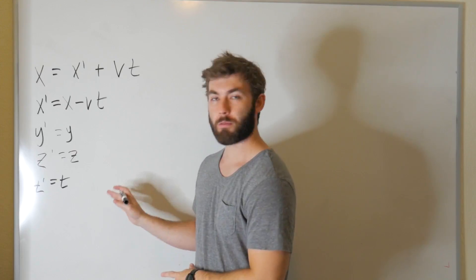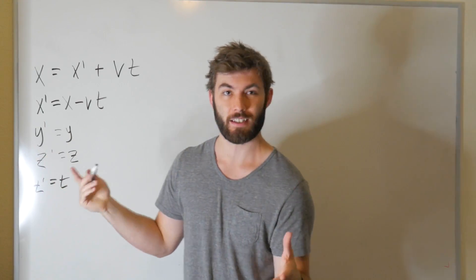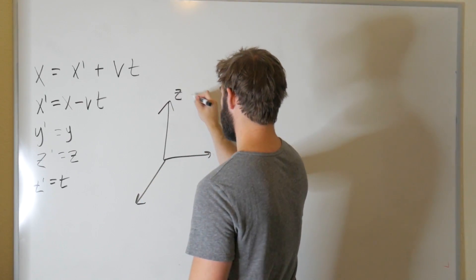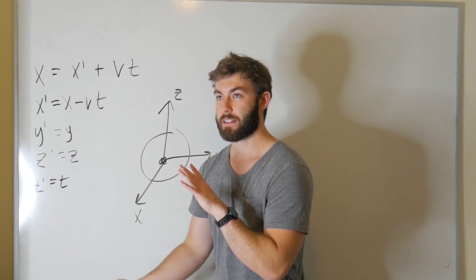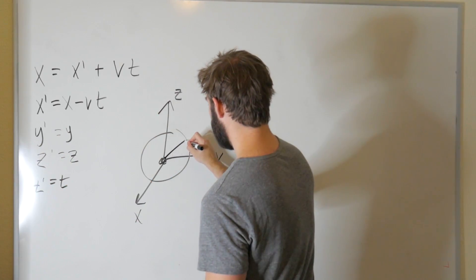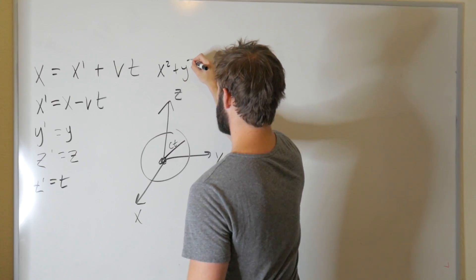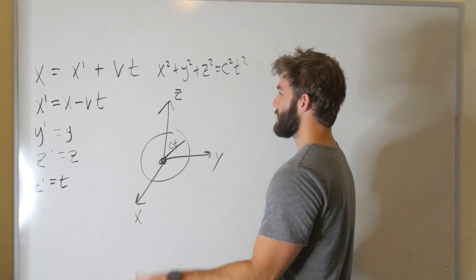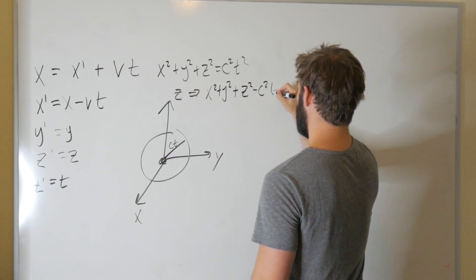In order to demonstrate why this transformation fails, let's consider an example where we have a spherical light bulb — you flip the switch and light starts going off in all directions. Let's draw this in a coordinate system with our Z axis, Y, and X. Here's our light bulb giving light off in all directions. This sphere of light — the radius of that sphere — is just going to be how fast light is times how long it's going for, so the radius is just CT. We can write the equation of a sphere as X squared plus Y squared plus Z squared equals C squared T squared. We can write this a little differently as X squared plus Y squared plus Z squared minus C squared T squared equals zero.